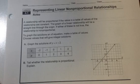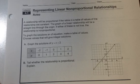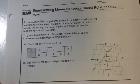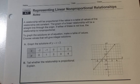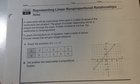Today we are going to look at representing linear non-proportional relationships. A relationship will be proportional if the ratios in a table of values of the relationship are constant. The graph of a linear relationship will be a straight line through the origin. If either of these is not true, the relationship is not proportional.